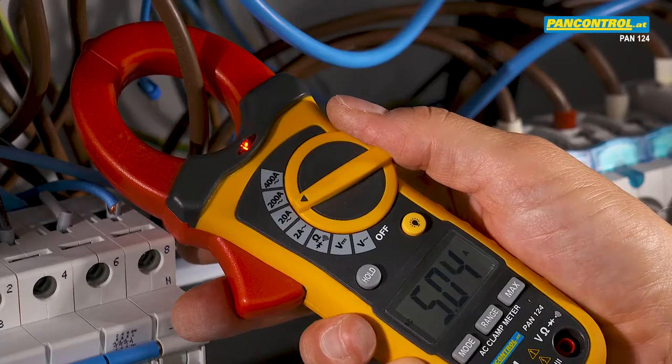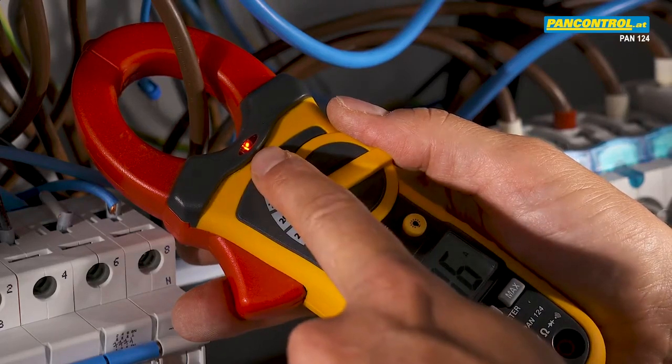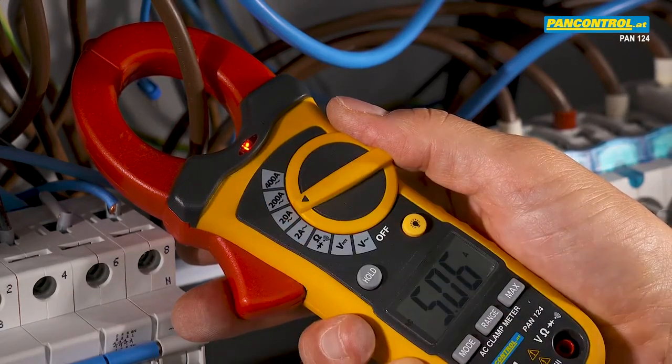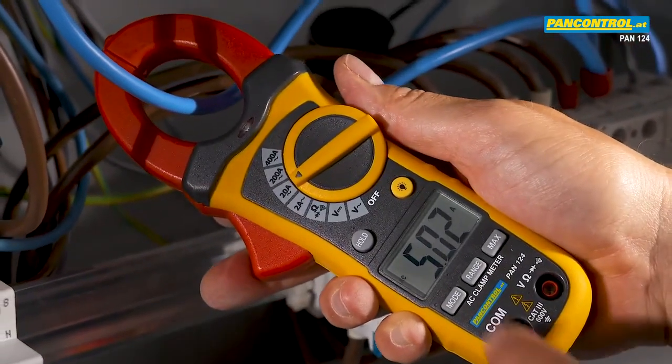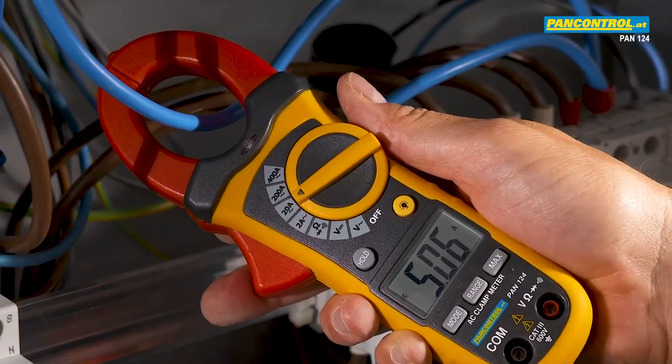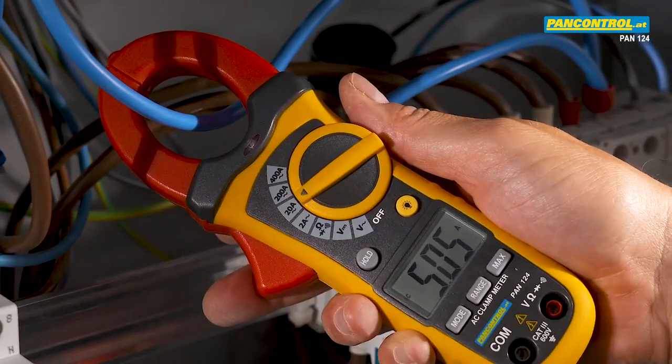When measuring the current of a phase conductor, the red light of the non-contact voltage tester lights up. When measuring the current of the neutral conductor, the displayed value remains the same but the red light remains dark.